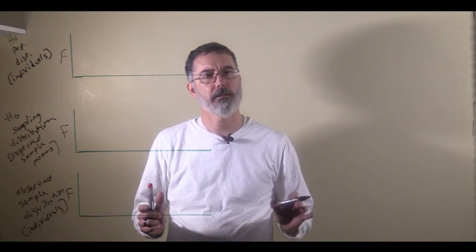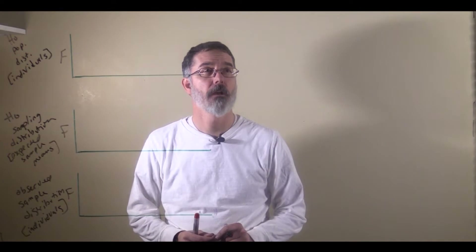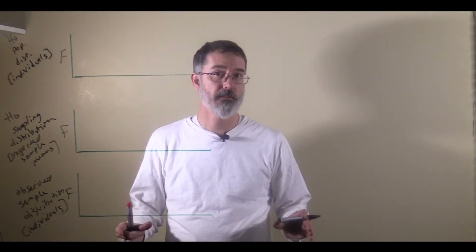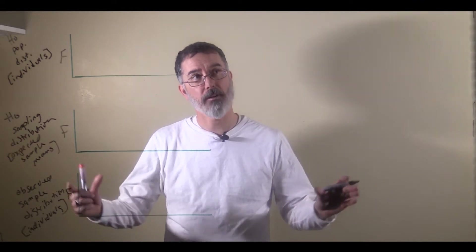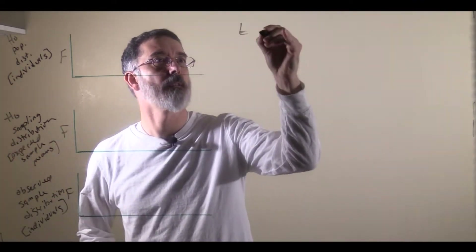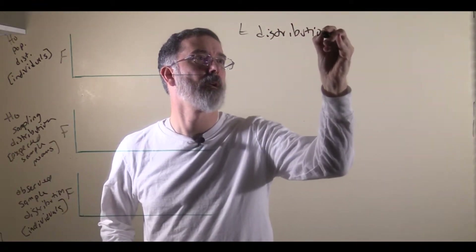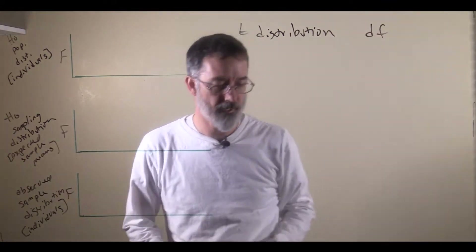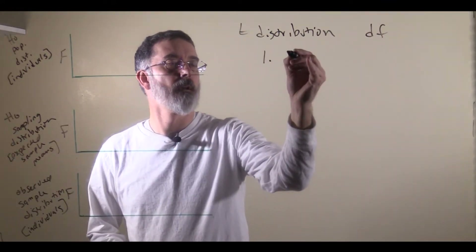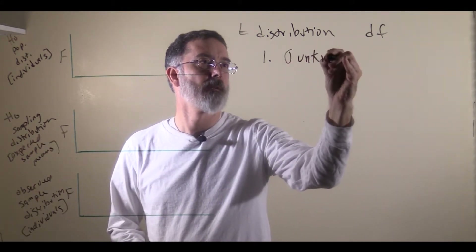I want to explain how T distributions — those sampling distributions — are not normally distributed like a Z distribution. I also want to explain degrees of freedom. These topics show up when the population standard deviation is unknown.